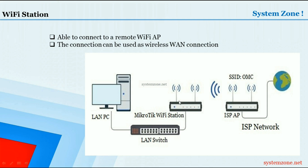We will learn how to configure a MikroTik wireless router as a Wi-Fi station so that the wireless router can connect to a remote ISP network and make a wireless WAN connection. We will also configure a LAN network in this MikroTik wireless router so that LAN devices can get internet over that wireless WAN connection. Let's start the configuration.